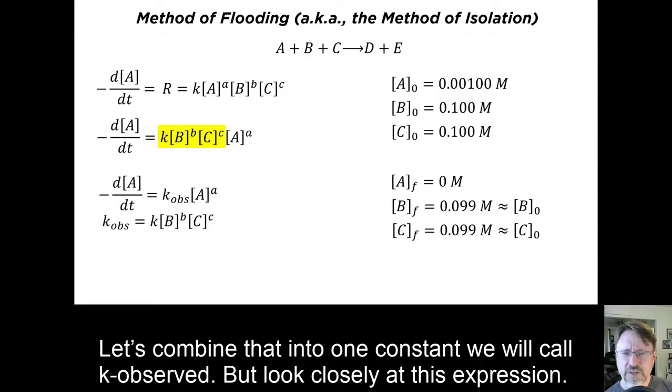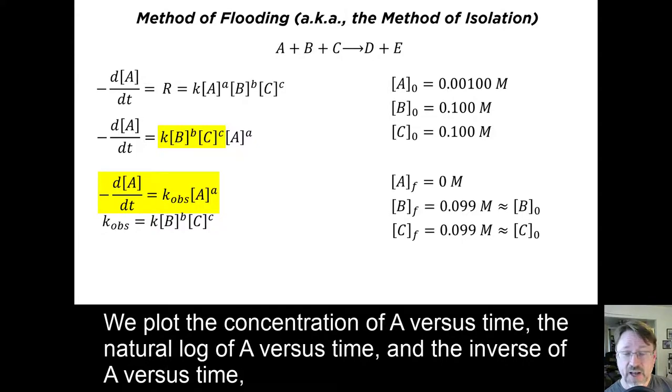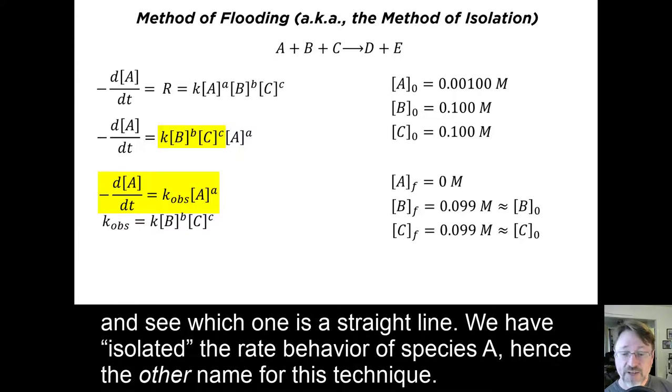But look closely at this expression. We now only have a single species in this new revised rate law, and we know how to handle that. We plot the concentration of A versus time, the natural log of A versus time, and the inverse of A versus time, and see which one is a straight line. We have isolated the rate behavior of species A, hence the other name for this technique.